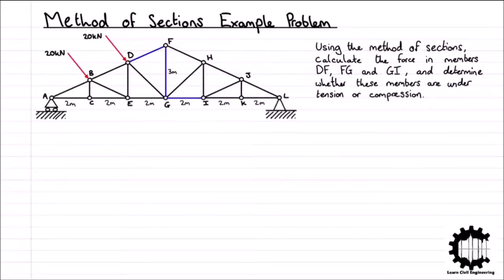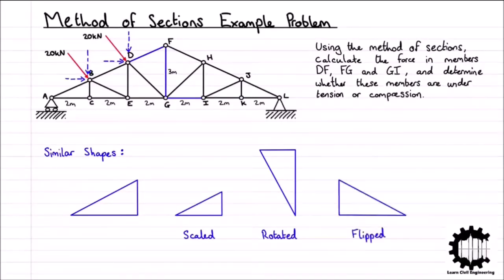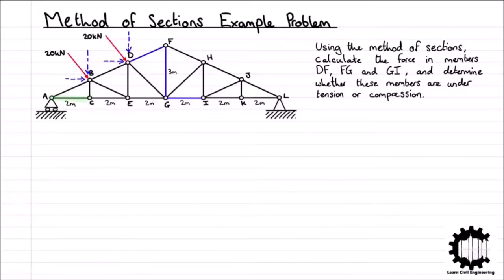Before we begin to solve any of the forces, there are a couple of things we can do to help with the rest of the problem, which involves determining the horizontal and vertical components of the forces being applied to the structure. Generally, I'd recommend doing this for most questions within structural analysis, as they greatly simplify the following steps. We can use the concept of similar shapes to simplify the external loads. Similar shapes are shapes of the same proportion and can become identical after being scaled, rotated, or flipped.